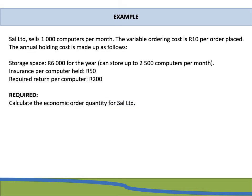Let's have a look at an example. Cell Limited sells 1000 computers per month. The variable ordering cost is 10 rand per order placed. The annual holding cost is made up as follows: storage space being 6000 rand for the year, insurance per computer held is 50 rand, and the required return per computer is 200 rand. We need to calculate the economic order quantity for Cell Limited - in other words, what must the order size be when Cell makes an order?